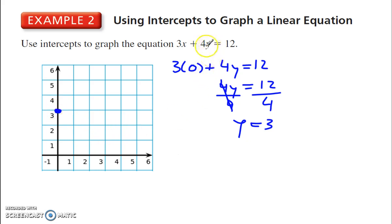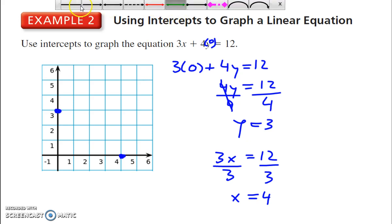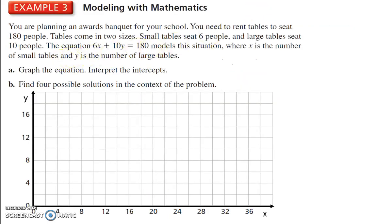And then the x-intercept, we make y 0. If I make this 0, I'm going to get 3x is equal to 12. Divide by 3 on each side, x is equal to 4. So, I go out on the x-axis to 4. There's my point. I only need 2 points to graph a straight line. Lines are always straight, so 2 points to graph any line. And there we go. So, I've graphed that using the x and y-intercepts.